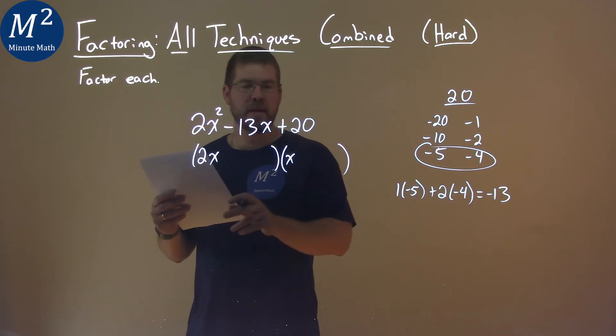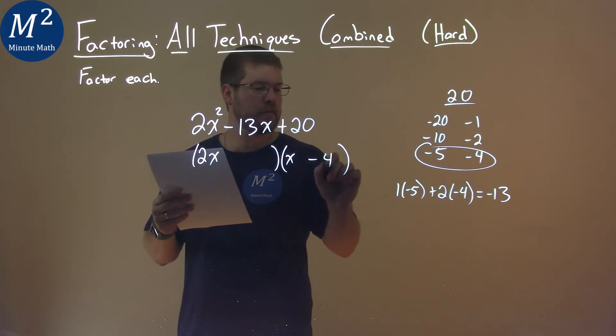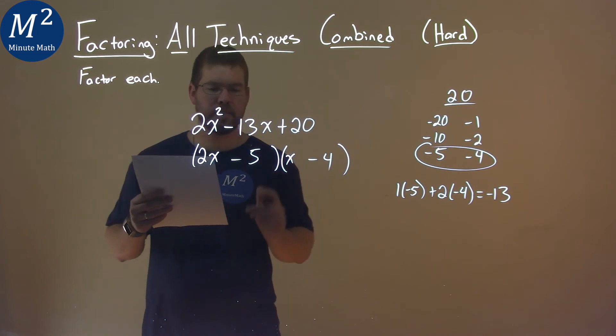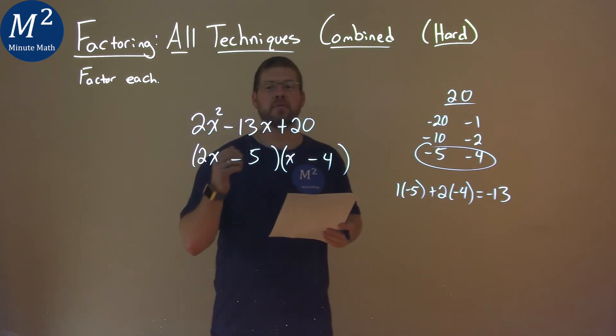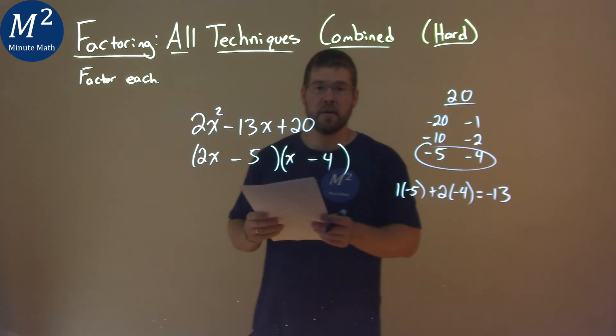So since the 2 goes with the negative 4, we put the negative 4 on this side and the negative 5 on this side. And so our final answer here is 2x minus 5 times x minus 4.